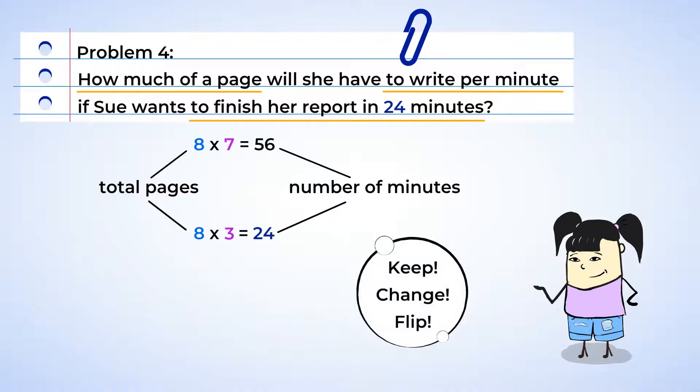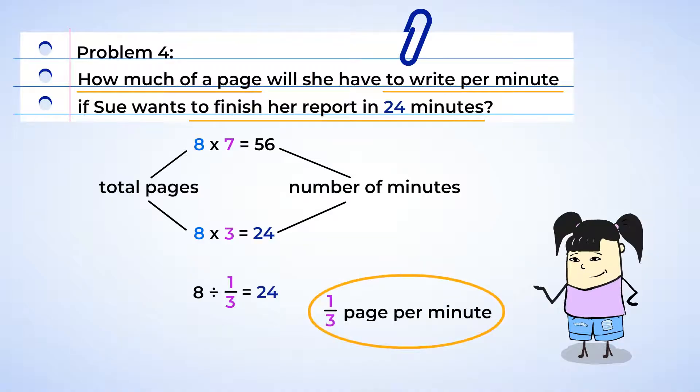Three. Now, to undo the keep, change, flip, eight divided by one-third is equal to 24. So Sue would need to write one-third of a page per minute in order to finish the book report in 24 minutes. That's a lot of writing in a little bit of time. Sue, get to it. We're moving on.